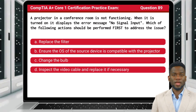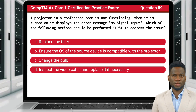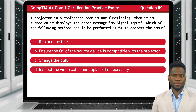Question 89. A projector in a conference room is not functioning. When it is turned on, it displays the error message 'No Signal Input.' Which of the following actions should be performed first to address the issue?